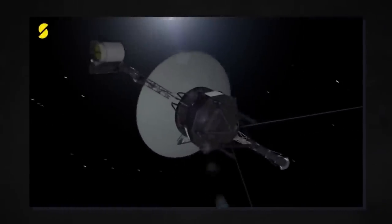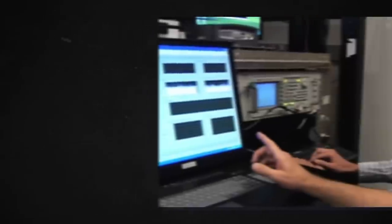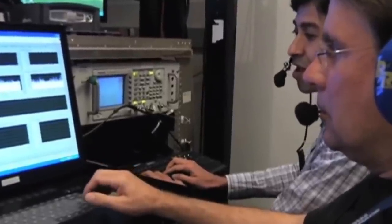Voyager 1 usually provides clean and easily readable data, but the reverse has been the case for some days now. The engineers consider this a major setback that may terminate this mission, even if they don't want to give up on it yet.